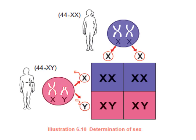The male also has 46 chromosomes total. Out of these, 44 are somatic chromosomes, which are identical. The sex chromosomes in the male are XY — XY is the male sex chromosome.